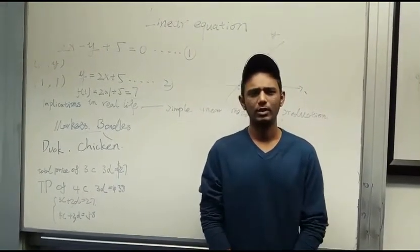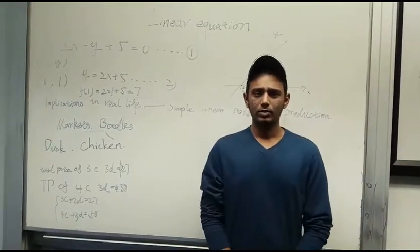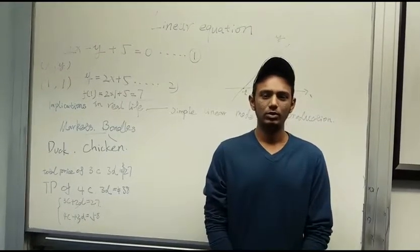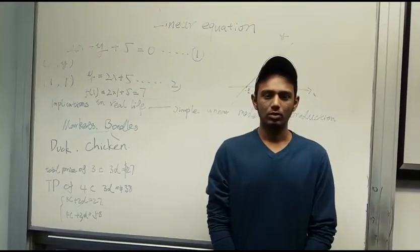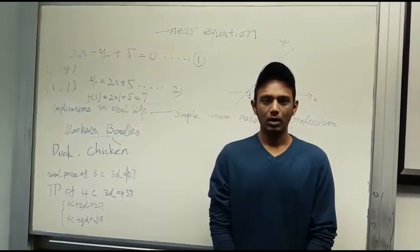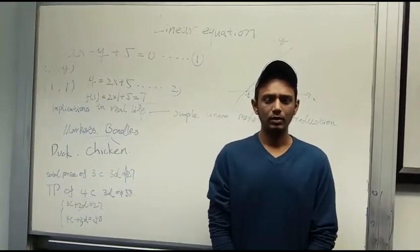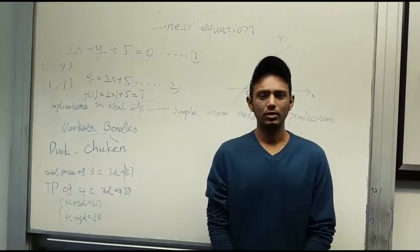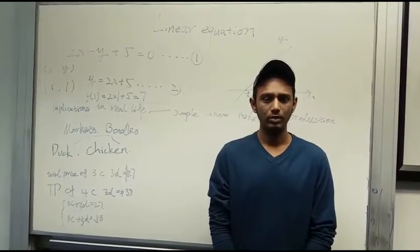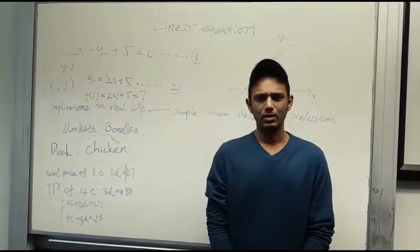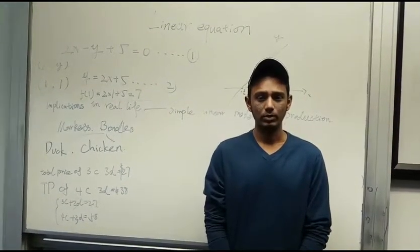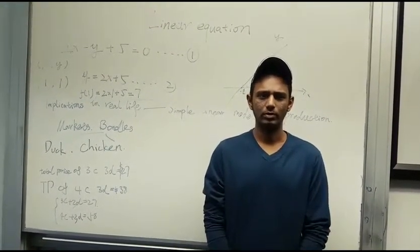The background is that linear algebra originated as the study of linear equations, including solutions for simultaneous linear equations. An equation is linear if no variable is multiplied by itself or any other variable. For example, the equation 3x plus 2y plus z is a linear equation in three variables.